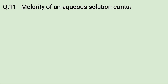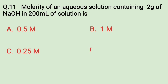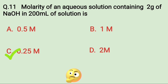Molarity of an aqueous solution containing 2g of NaOH in 200ml of solution is: A. 0.5M, B. 1M, C. 0.25M, D. 2M. Try to solve it. The correct answer is 0.25M.